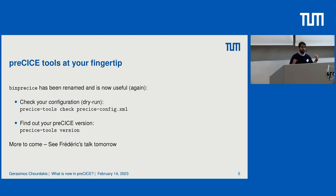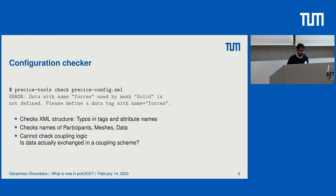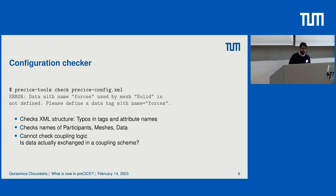This check feature is now integrated into something previously shipped with Precise but not very useful — called bin precise. In the past it had completely different roles, but nowadays we are reviving it and it will have more features soon. You can also get your Precise version without having to start a simulation to see what it links to. If you run precise tools check on a configuration file, it does a primitive structure analysis and tells you about typos or wrong attribute names.